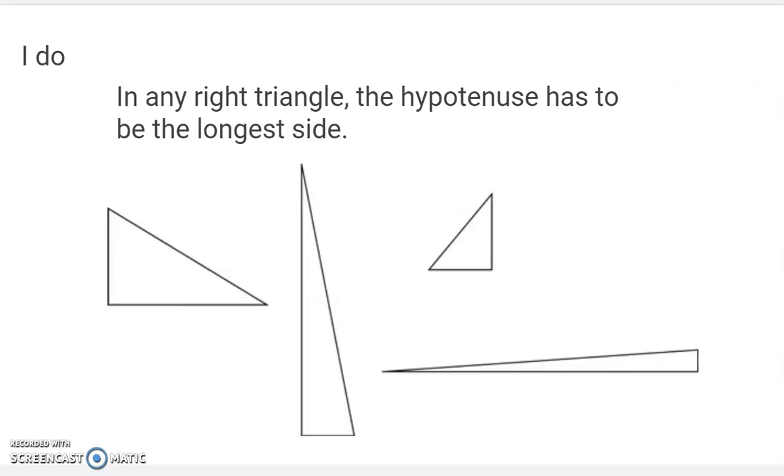Real quick before I get to the type of question you're going to work on, in any right triangle, the hypotenuse has to be the longest side. So when we look at these, if I mark the right angle in each of these, these are all right triangles. Every single time, the hypotenuse has to be the longest side. There's no way for the hypotenuse to be shorter than one of the legs. If you could bring this down, flatten it out, it would be longer than that longest leg. Just thing to know, the hypotenuse has to be the longest side.